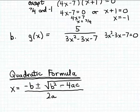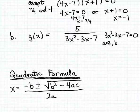In other examples we cover quadratic formula solutions in more detail; here I'll move quickly. To use the quadratic formula, we need the equation set equal to zero — which it is — and we need to identify the coefficients. The leading coefficient a is 3 (the coefficient of the x-squared term). The second coefficient b, for the x-to-the-first-power term, is negative 3. The constant coefficient c is negative 7. Once we've identified the three coefficients, we substitute them into the quadratic formula to find the solutions.